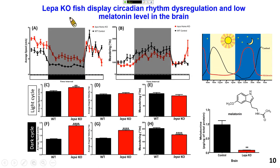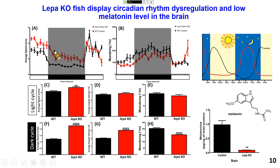We also used this methodology to study a mutant fish called leptin A. The leptin A mutant fish has an obesity phenotype. We wanted to know what the circadian rhythm is like for this obese fish. After testing, we found that the obese fish in both morning and night cycles are always very active — their locomotion index is quite high. The reason is that the melatonin level in the leptin A knockout fish is very low, so they cannot maintain good sleeping patterns.